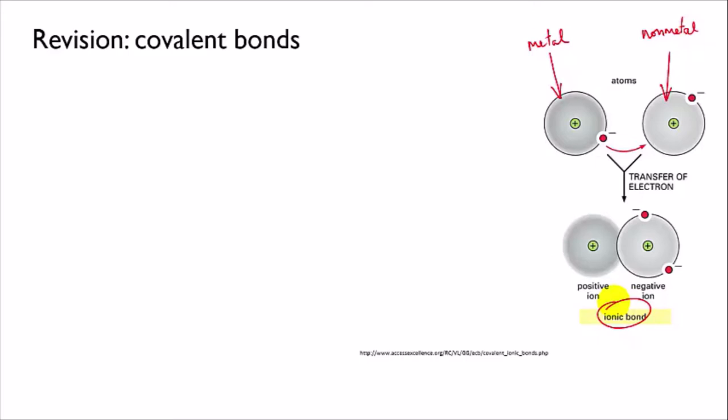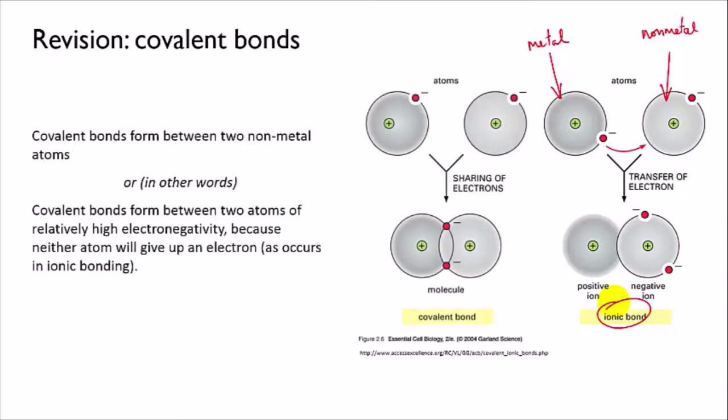However, if both atoms have relatively high electronegativity, it's not energetically favourable for either of them to give up an electron to get a full outer shell. So instead, they share electrons, and they complete their outer shells in that way. And this is called the covalent bond.